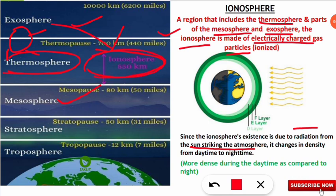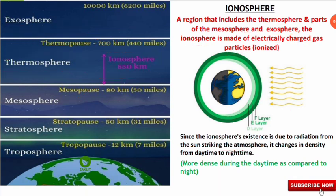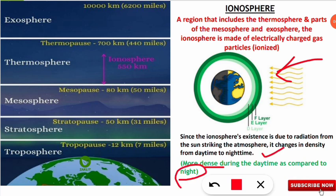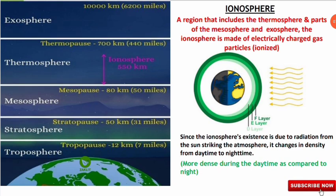If a question asks to select one option, you should select that the ionosphere lies majorly in the thermosphere region. The ionosphere is divided into three layers: D layer, E layer, and F layer. The density of electrically charged gas changes because it depends on the sun's energy — the ionosphere is denser during the day when solar radiation is maximum, compared to night.